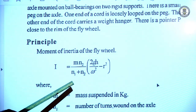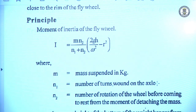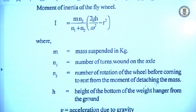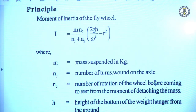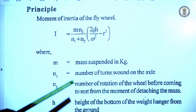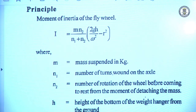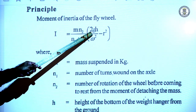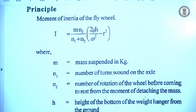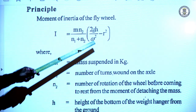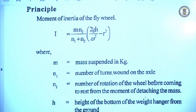For these n₂ rotations, the wheel takes a certain time t. t is the time for n₂ rotations. From that we calculate the value of omega: ω = 4πn₂ / t. Here g is the acceleration due to gravity, h is the height of the mass suspended from the ground, and r is the radius of the axle.